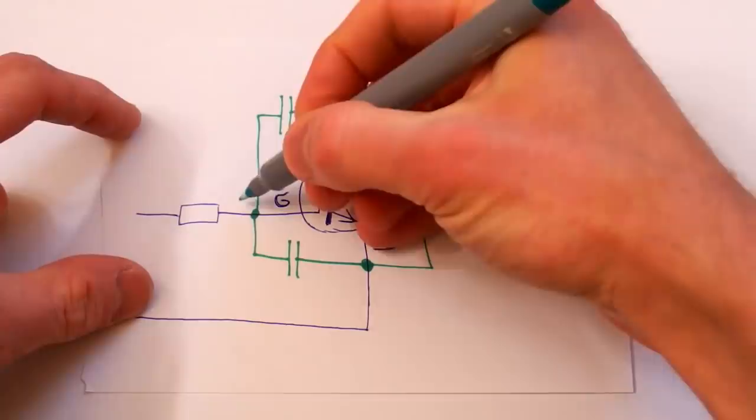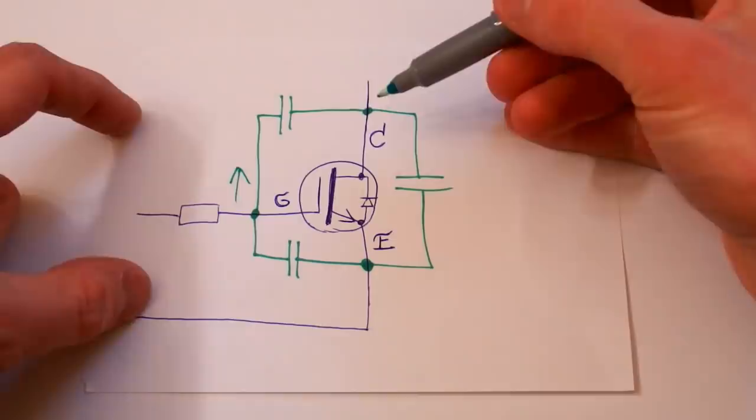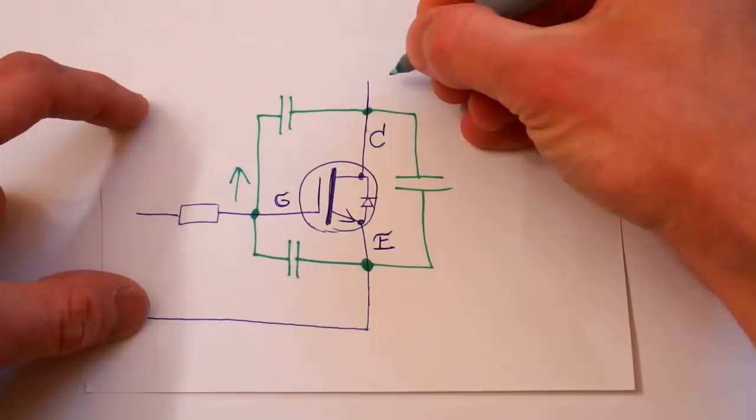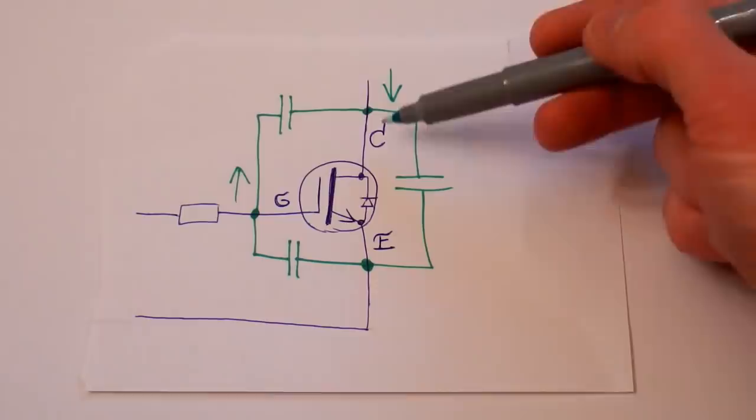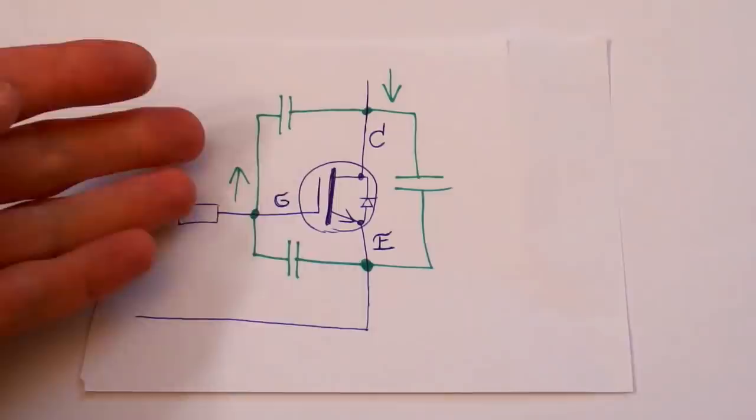Here's the problem. When you want to turn the transistor on, you have to raise the voltage on its gate. As it's turning on, the voltage goes up on the gate, but it also pulls the voltage of the collector down. And as the collector voltage goes down, it also forces the gate voltage down through this Miller capacitance — so it basically works against the gate driver.